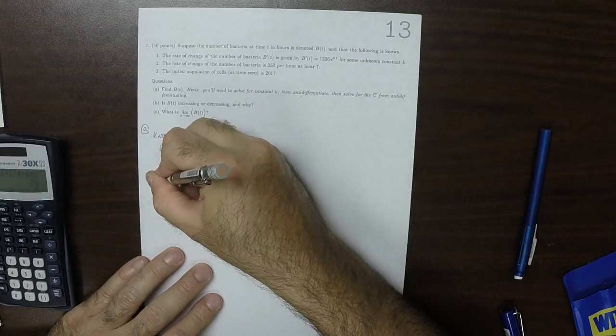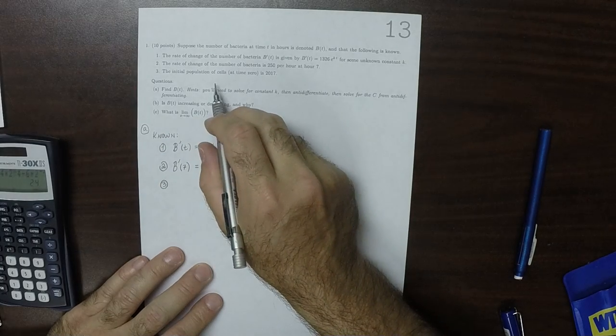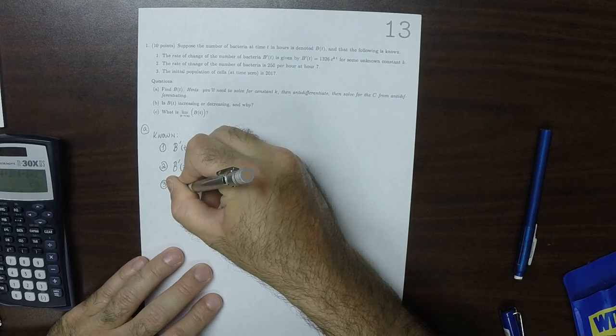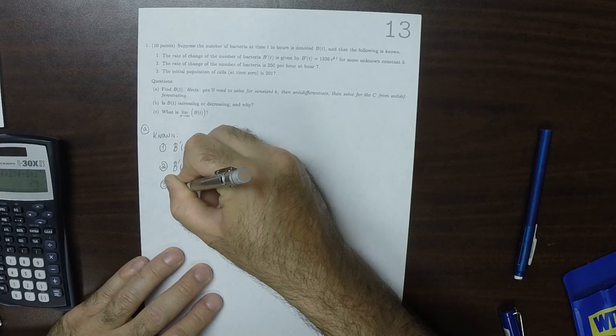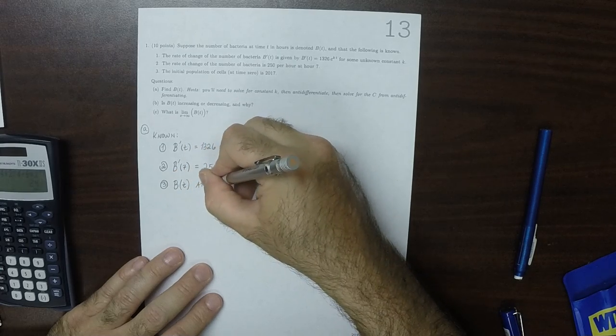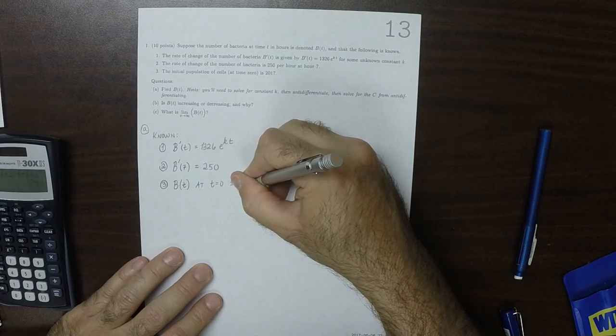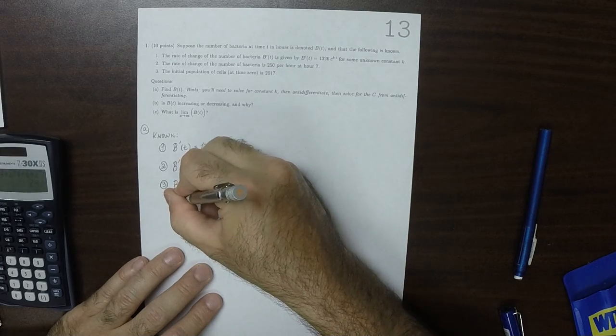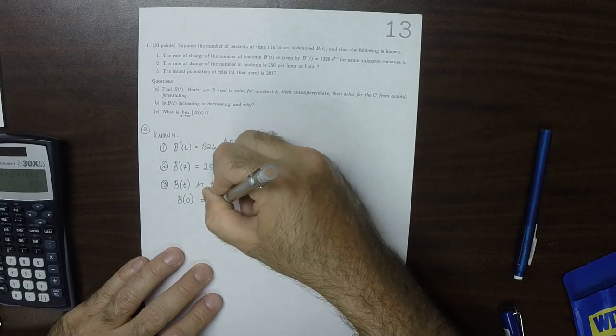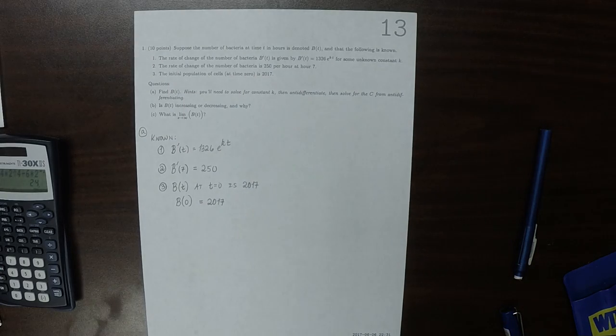Item 3 is saying that the initial population, that is to say, not the derivative, but the population B(t) at t equal to 0 is 2017, which is to say B(0) is 2017. So those are the three things that we know.